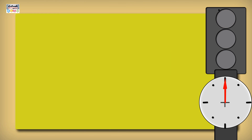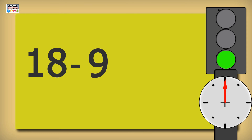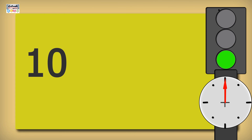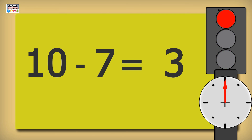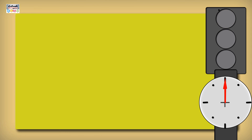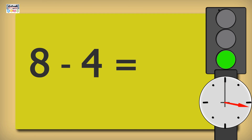18 minus 9 is equal to 9. 10 minus 7 is equal to 3. 9 minus 6 is equal to 3. 8 minus 4 is equal to 4.